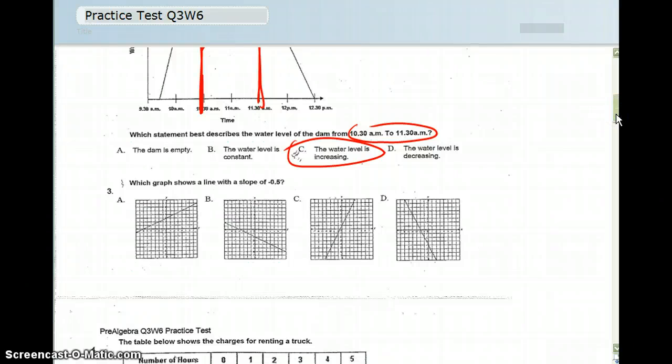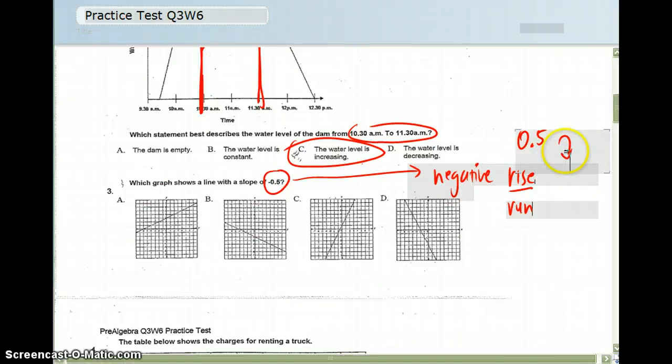And number three, we are looking for the graph with a slope of negative 0.5. So first of all, I know that it is negative 0.5. Fractions are usually written as rise over run, so I am going to change the 0.5 to a fraction, which is negative 1/2. Because it is negative, it already gives us a clue that it is going to be downward sloping.